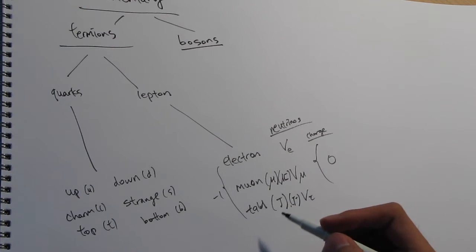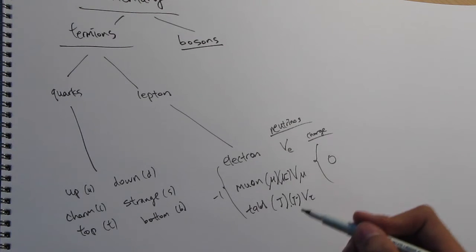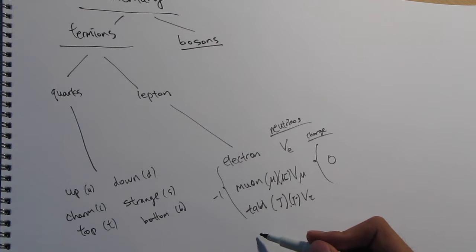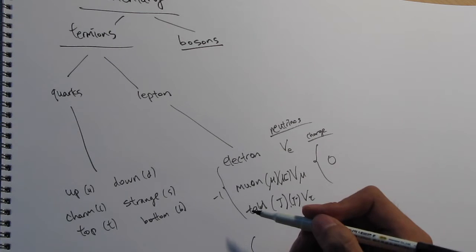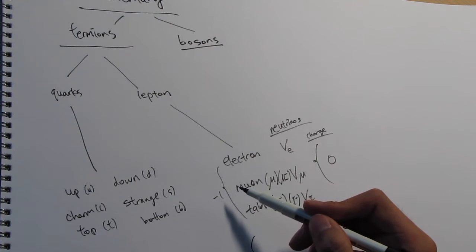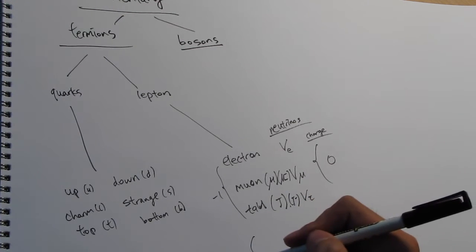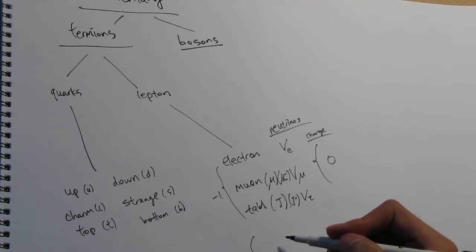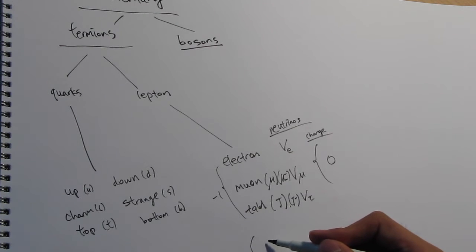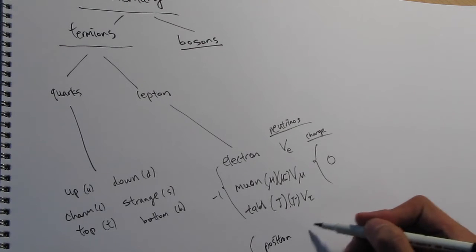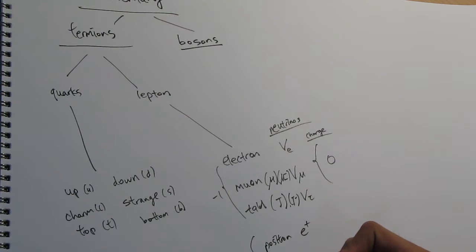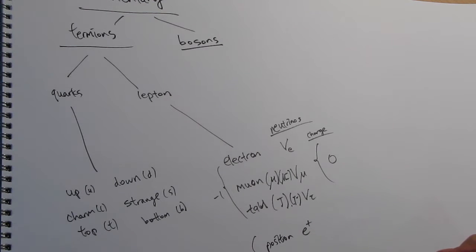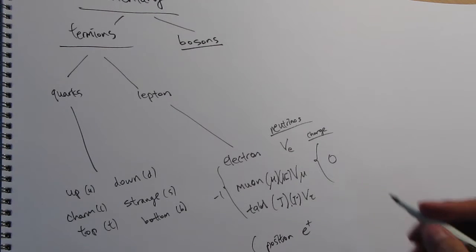Sometimes you will see that these particles have an antiparticle. The definition of an antiparticle is a particle that has the opposite charge. So these will have a charge of plus one. The antiparticle of the electron is the positron, and there are also mu-plus and tau-plus. So we are done with the leptons.